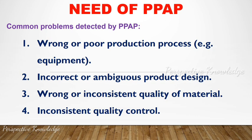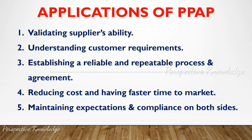The need for PPAP: PPAP helps detect common problems. If PPAP is properly completed, major defects can be identified and addressed, including wrong or poor production process equipment, incorrect or ambiguous production product design, wrong or inconsistent quality of material, and inconsistent quality control. PPAP makes defects easy to find and rectify.